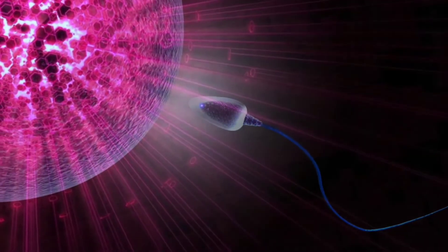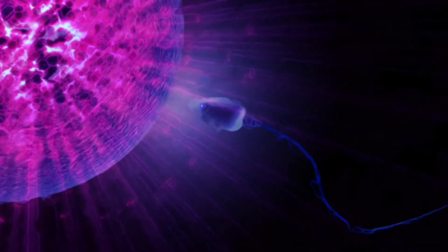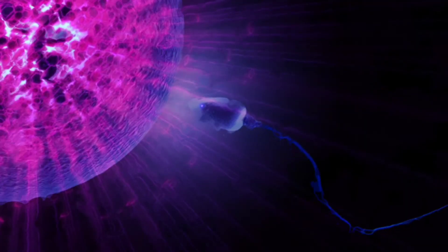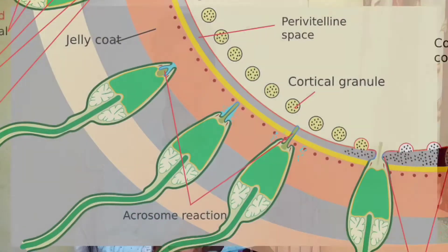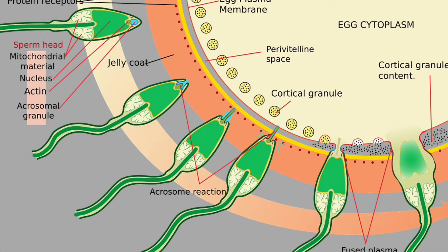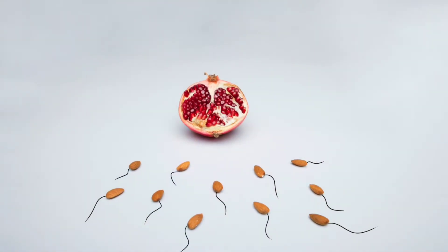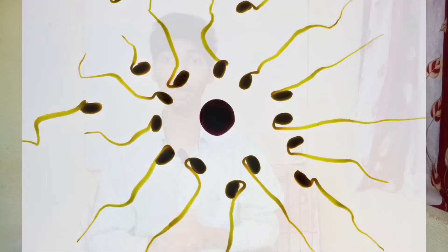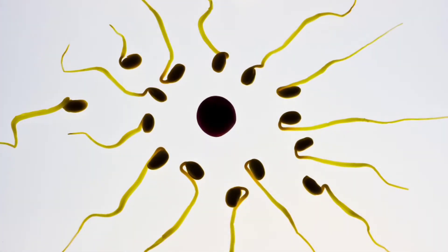spoon-shaped on a side view. Number two: the head contains a large oval and flat nucleus. Number three: the anterior half of the nucleus is covered by a cup called the acrosome, which is formed from the Golgi body of a spermatid.